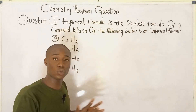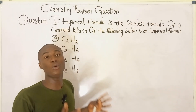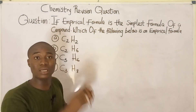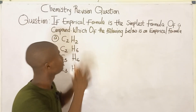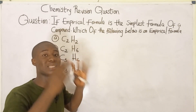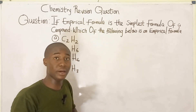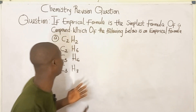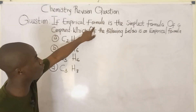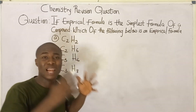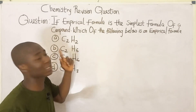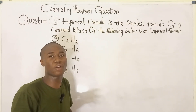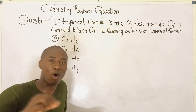Welcome to today's video lesson with Bright Edu. In today's lesson I'll be answering this particular question written on the board. The question is on empirical and molecular formula. The empirical formula is the simplest formula of a compound — the simplest form a compound can exist.